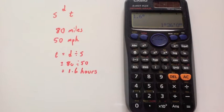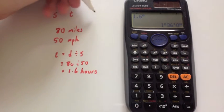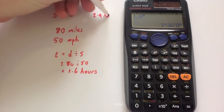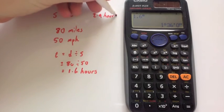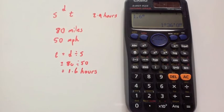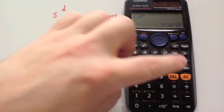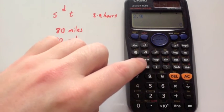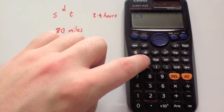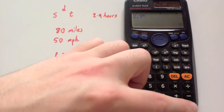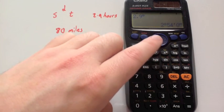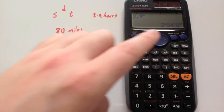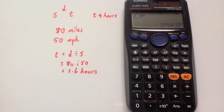For instance, if I wanted to convert 2.9 hours into hours and minutes and seconds, I would just press 2.9, press this button here, press equals, and now I can see it's 2 hours and 54 minutes.